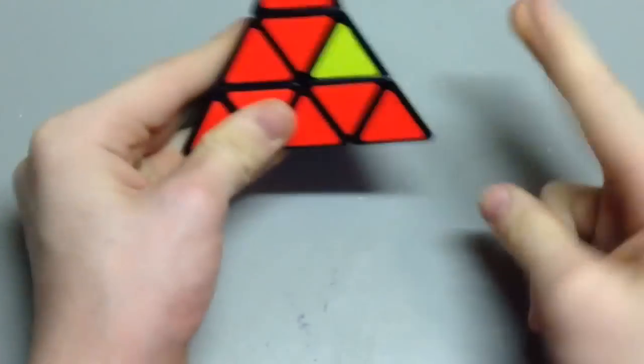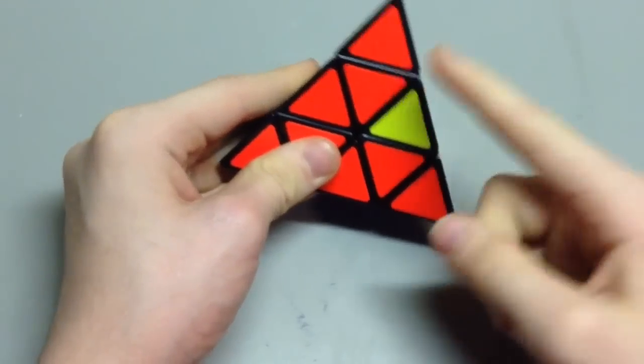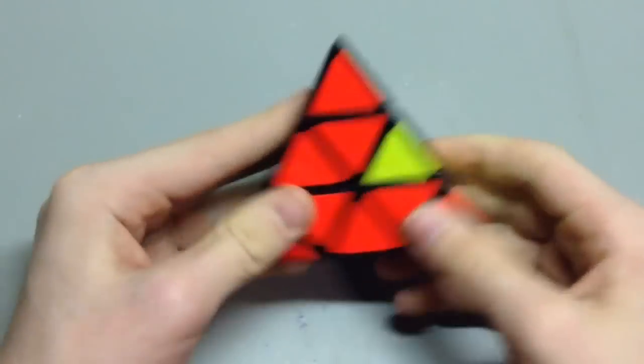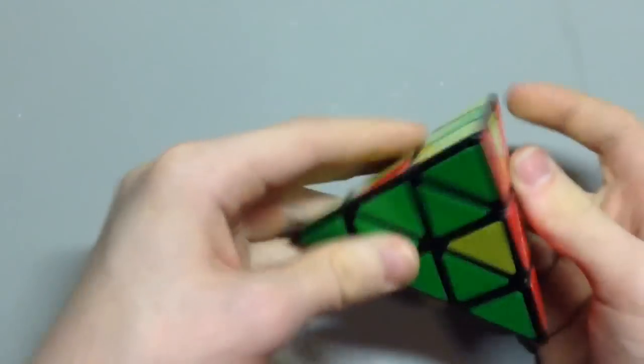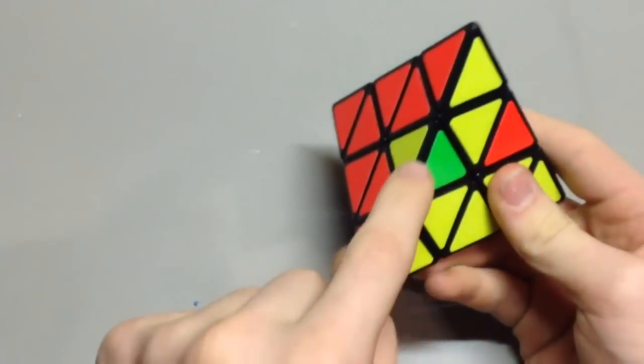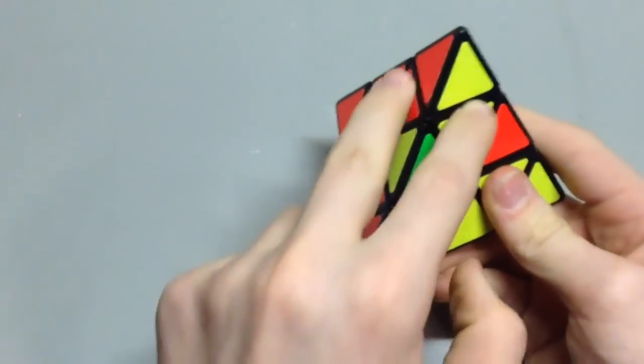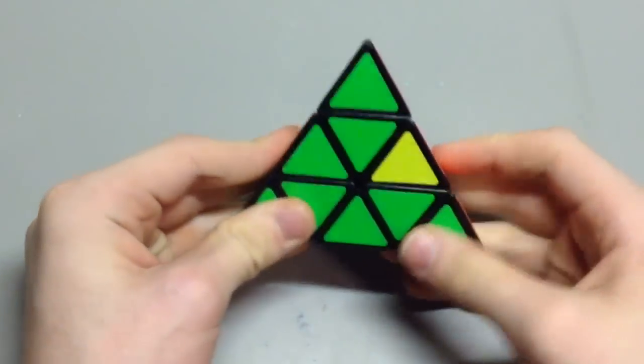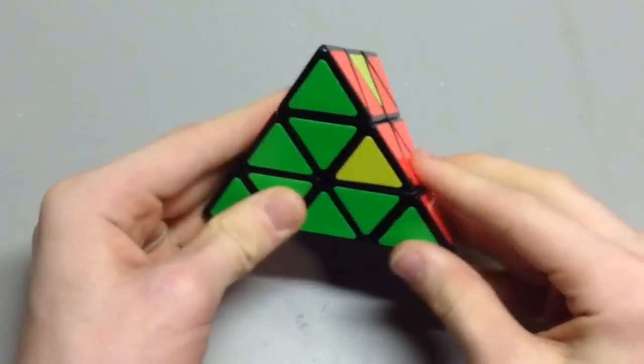To do this one, there's two different ones. There's this and then there's a mirror to it. To do it, you find the one piece that doesn't match. You see, like this piece matches right here, and this piece matches right here. So you'll find this piece that doesn't have any matching. Put it in the back.